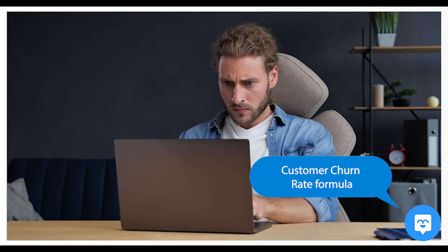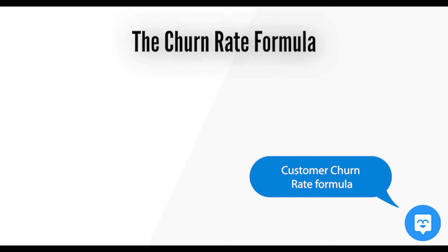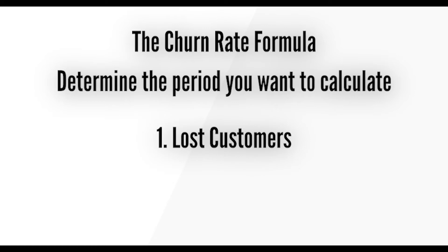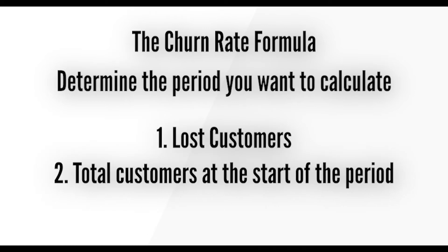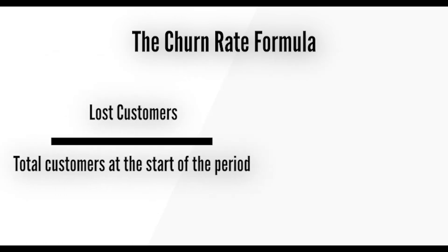One way to understand why customers are leaving is to have a customer feedback strategy. The customer churn rate formula is quite simple. Before you calculate it, you'll need to determine the time period you want to calculate — will you calculate for the month, quarterly, or for the year? You'll also need two numbers: lost customers and total customers at the start of the period. The churn rate formula is: lost customers divided by total customers at the start of the time period, multiplied by a hundred.